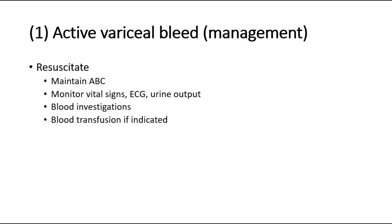If there is active variceal bleeding in a hemodynamically unstable patient, we must resuscitate the patient by maintaining their airway, keeping intubation in view, and assessing their breathing — giving high-flow oxygen and maintaining oxygen saturation above 94%. For circulation, we establish two or more large-bore IV cannulas, and monitor vital signs, pulse oximetry, ECG, and urine output.